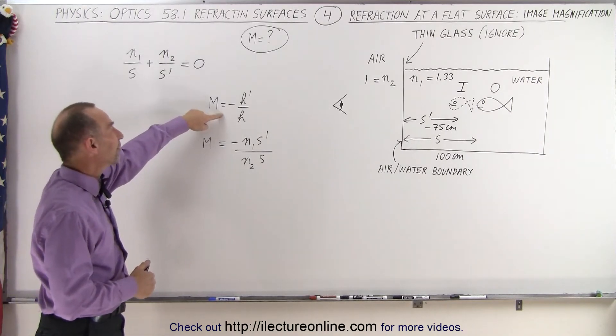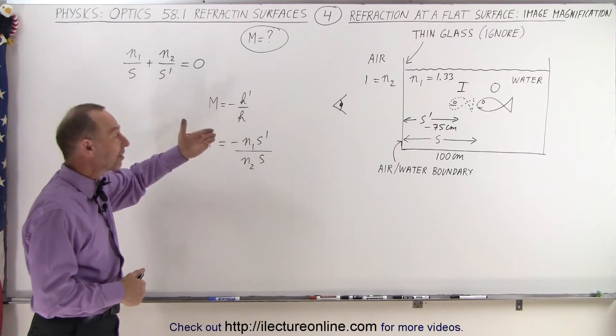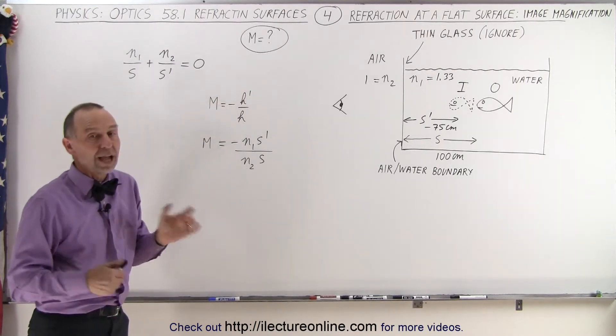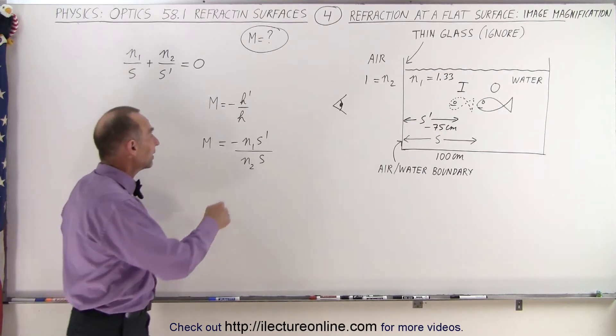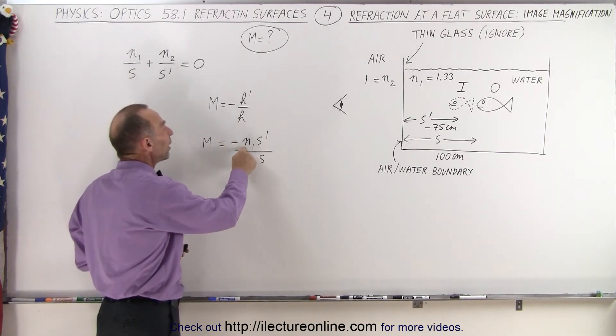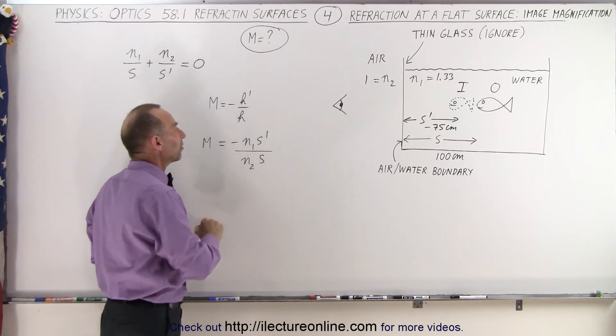So the magnification is defined as the negative fraction of the height of the image divided by the height of the object, which makes sense. And therefore, we can see then that this is equal to the negative N1 times S prime divided by N2 times S.